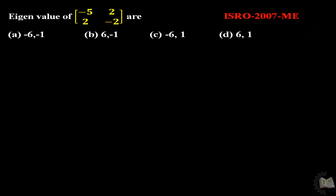Find the eigenvalues of the matrix A = [[-5, 2], [-2, ?]]. To calculate eigenvalues, we know the formula — first write the characteristic equation. Let the matrix be A.